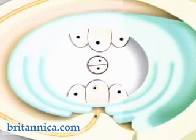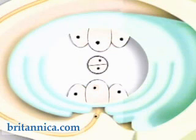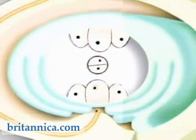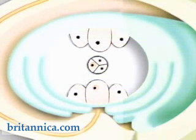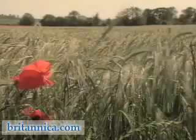The pollen tube releases one male gamete nucleus which fuses with the female egg cell nucleus. This is the moment of fertilization and produces a diploid zygote — the first cell of the new sporophyte — which will divide repeatedly to produce the embryo. The other male gamete nucleus fuses with the diploid polar nucleus to produce a unique triploid nucleus.